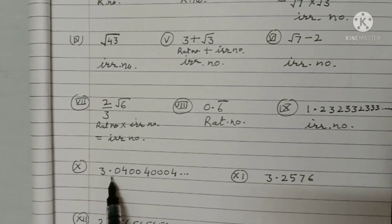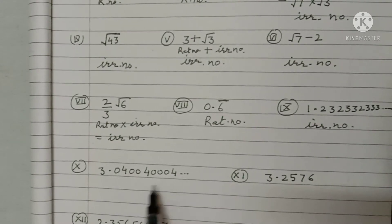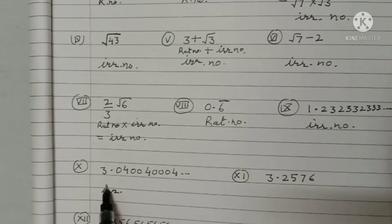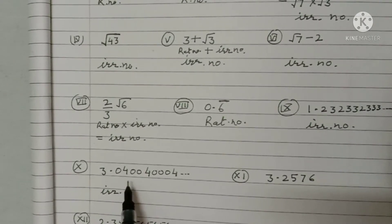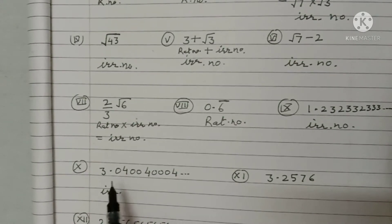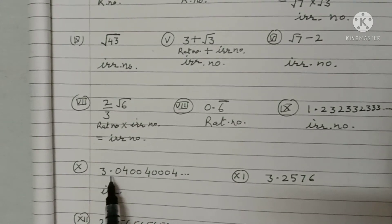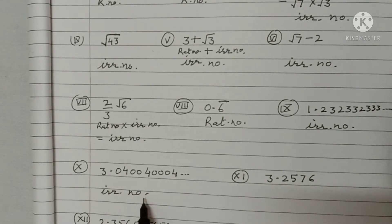Part ten: 3.040004... and so on. This is also an irrational number because the group of digits are not repeating — it is non-terminating and non-repeating. Such numbers are known as irrational numbers.